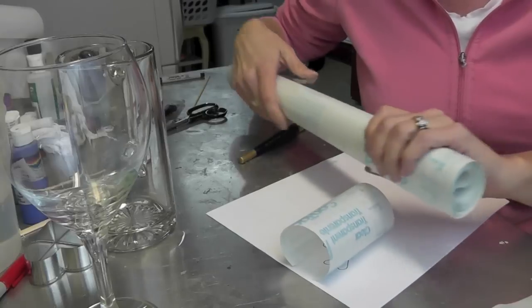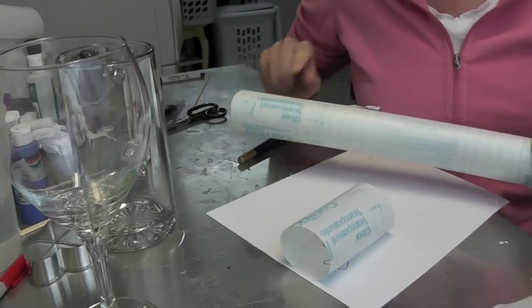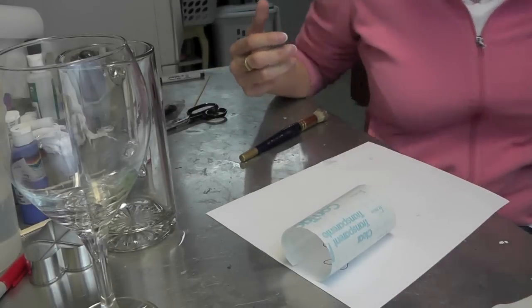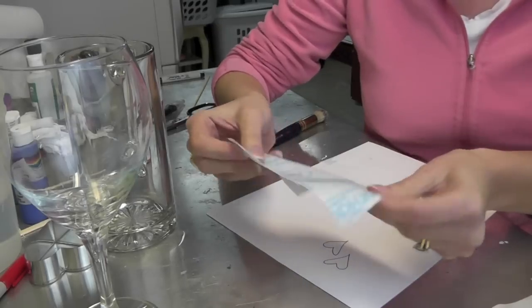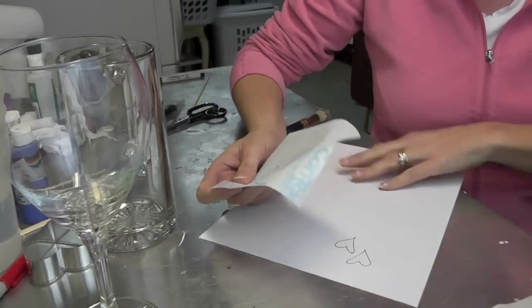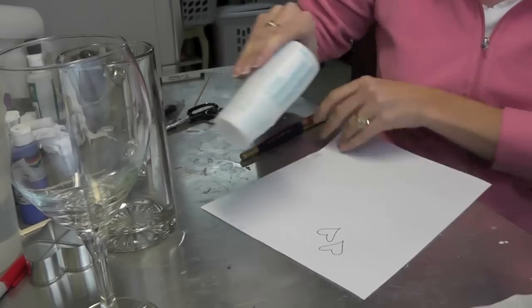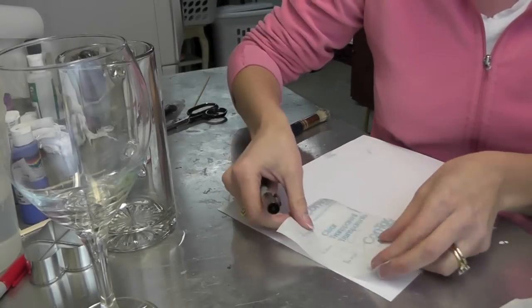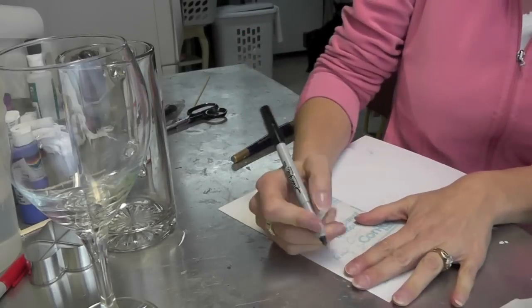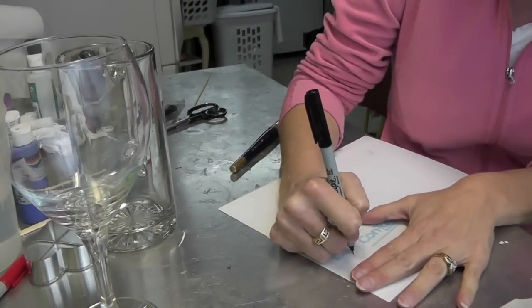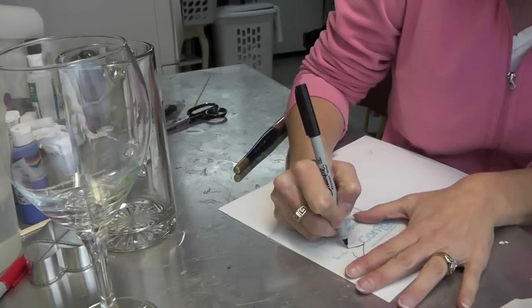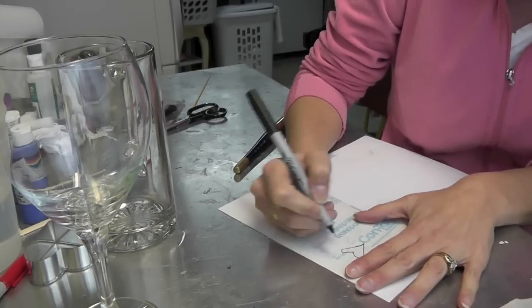I have a roll of contact paper, which you can buy by the shelf liners usually at the big box stores like Walmart or Target. Let me clean this up. I drew a couple hearts on a piece of paper, and you can do any design that you want, but I want to do hearts for Valentine's Day. I'm going to trace them right onto the contact paper.